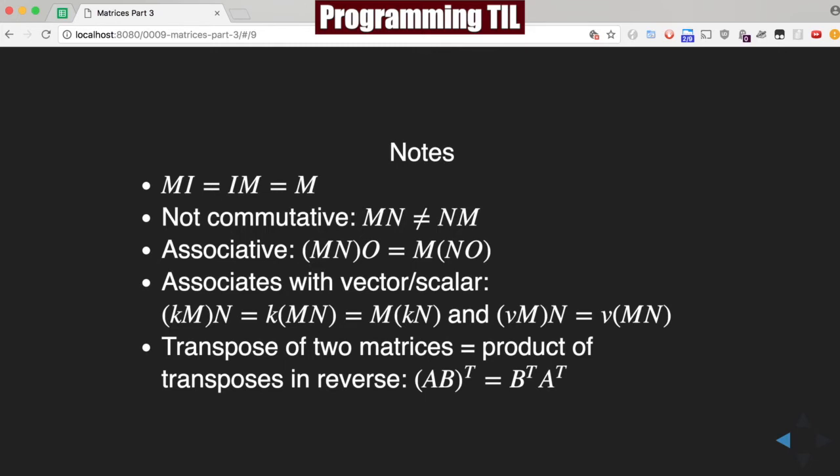So just a last few notes to finish up on matrix multiplication today. Note that if you're multiplying matrices by the identity matrix, it can be on either side and it'll still always equal the matrix that is given. It's not commutative, meaning if you multiply MN, it's not going to be the same as when you multiply by NM. It'll be different.